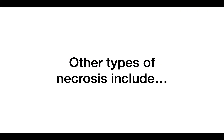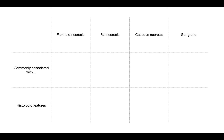The main two types are coagulative and liquefactive. What are other types of necrosis? Pause the slide, think about it, then go on to the next slide. Some of the other types are fibrinoid necrosis, fat necrosis, caseous necrosis, and gangrene — which can be wet or dry. Fill out the table with what each is commonly associated with and the histologic features, then go on to the next slide.